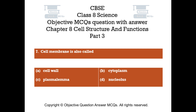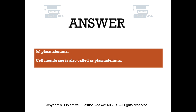Question number 7: Cell membrane is also called — Option A: Cell wall, Option B: Cytoplasm, Option C: Plasma lemma, Option D: Nucleolus. The right answer is Option C: Plasma lemma. Cell membrane is also called plasma lemma.